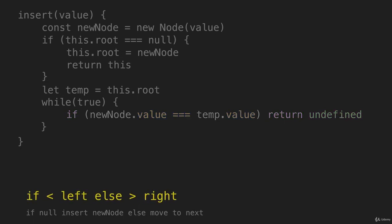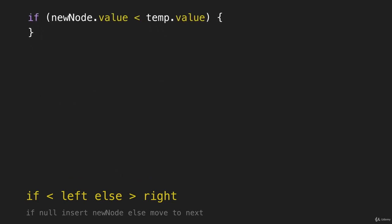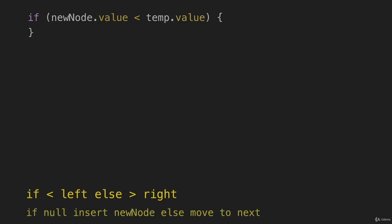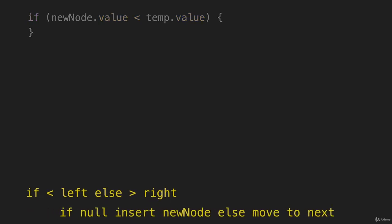This is where it gets interesting. If the value is less than we go left, else if it's greater than we go right. We have to have an if statement — I'm going to start with left. If new node dot value is less than temp dot value, this is where we're going to build out quite a bit of code. This other if statement is really nested inside of this if statement.